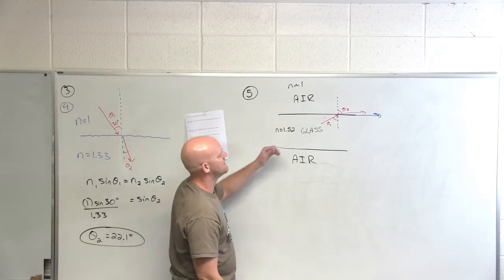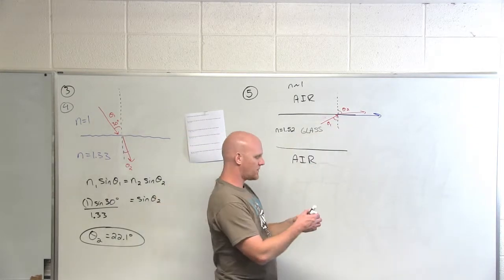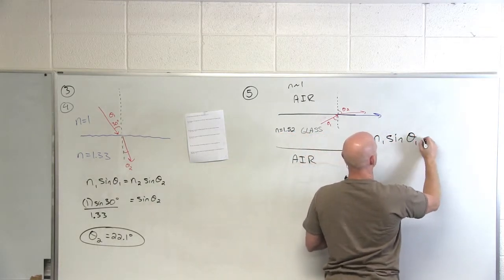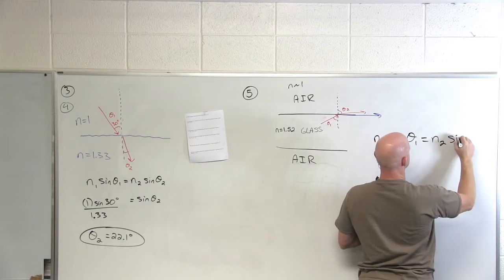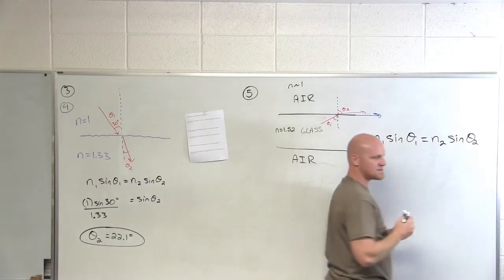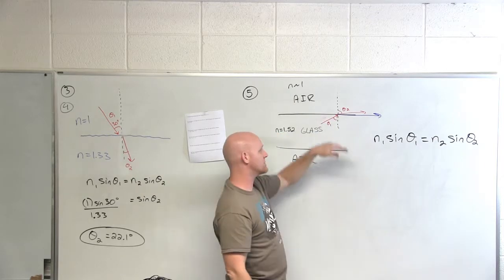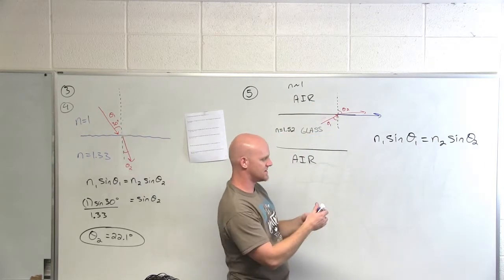We call that point total internal reflection. If we look at Snell's law in that light again, we only have a chance of this happening if this thing bends away from the normal. That only happens if we're going from a larger to smaller index of refraction.